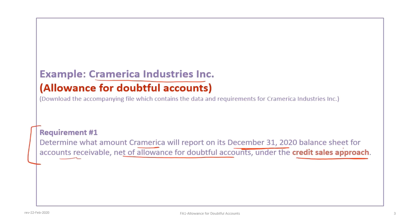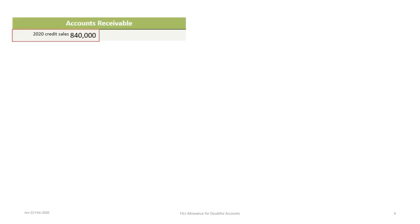In this example, in 2020 the company uses the credit sales approach, and then in requirement two for 2021 the company switches over to the accounts receivable approach. The easiest way to deal with these is to keep T-accounts for both accounts receivable and the allowance for doubtful accounts.